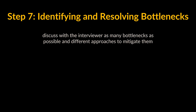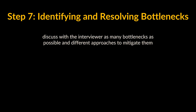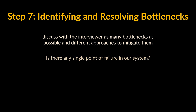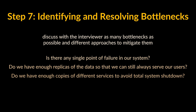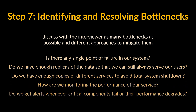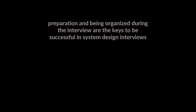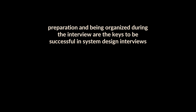Step seven: identifying and resolving bottlenecks. Try to discuss as many bottlenecks as possible and different approaches to mitigate them. Is there any single point of failure in our system, and what are we doing to mitigate it? Do we have enough replicas of the data so that if we lose a few servers we can still serve our users? Do we have enough copies of different services running such that a few failures will not cause total system shutdown? How are we monitoring the performance of our servers, and do we get alerts whenever critical components fail or their performance degrades?